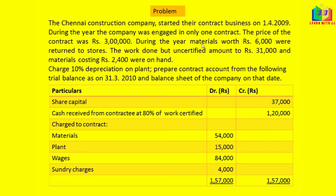During the year, materials worth Rs 6,000 were returned to stores. The work done but certified amounted to Rs 31,000 and material costing Rs 2,400 were on hand. Charge 10% depreciation on plant. Prepare the contract account from the following trial balance as on 31-3-2010 and the balance sheet of the company on that date.